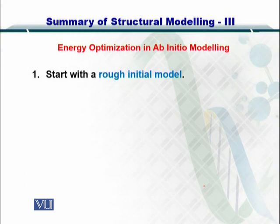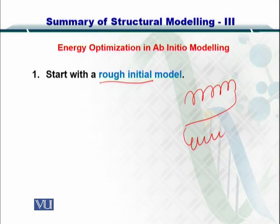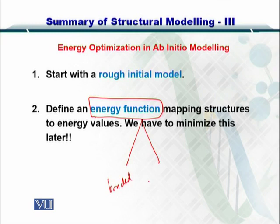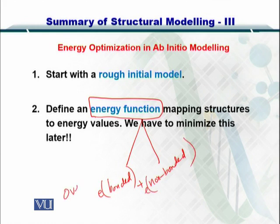In ab initio modeling there are two steps, and here I will discuss the first step. You start with a rough initial model — for example, you estimate your protein to have an alpha helix and a beta sheet followed by another alpha helix. This is your rough initial model. Next, you define an energy function that counts bonded and non-bonded atoms within the structure, and the overall energy is just the sum of these two factors.